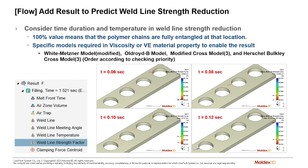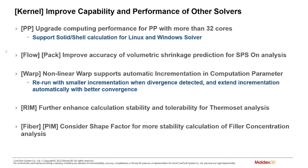We've enhanced our weld line capabilities by adding a new result called weld line strength factor. On top of the weld line temperature and weld line meeting angle, this will allow you to more accurately predict the strength relative to other weld lines and even to other runs. This is expressed as a percentage in reference to the material's modulus.